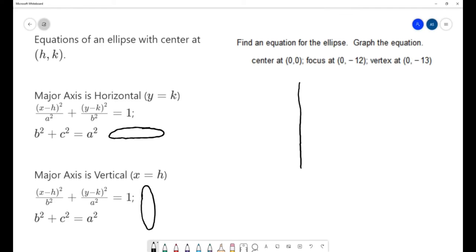When I'm putting this information down it's going to help me figure out that orientation. Our center is at (0, 0), we have a focus at (0, -12), so 1, 2, 3, 4, 5, 6, 7, 8, 9, 10, 11, 12, that's our focus, and then we have a vertex at (0, -13).